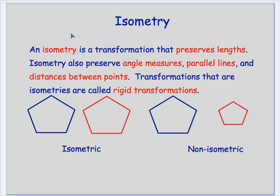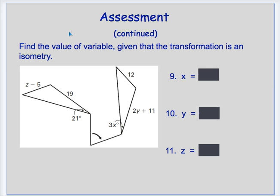An isometry is a transformation that preserves lengths. Nothing's changing. They're what's called rigid transformations. If you look here, these are isometric. They're identical, almost congruent to each other. These two over here are non-isometric. So when you look at this example here, they're congruent to one another.